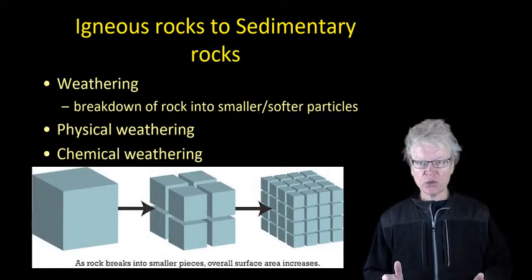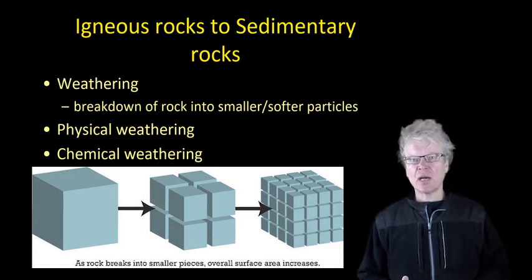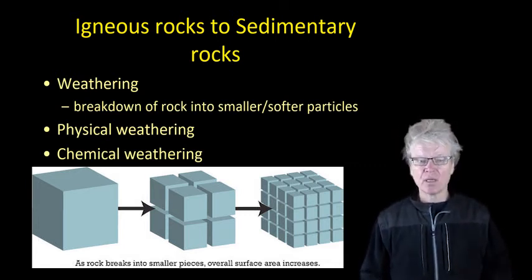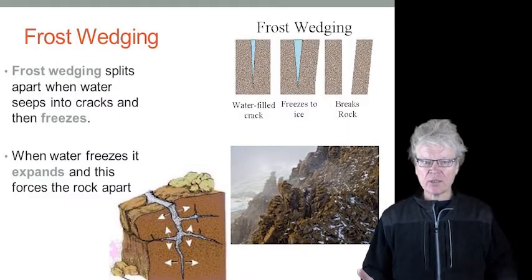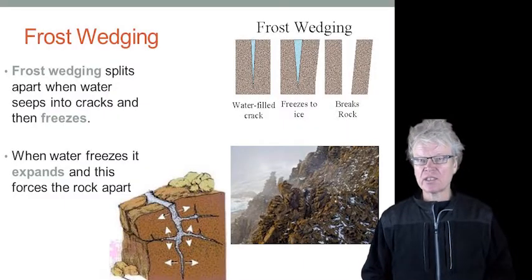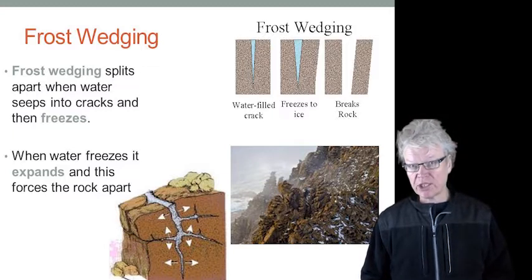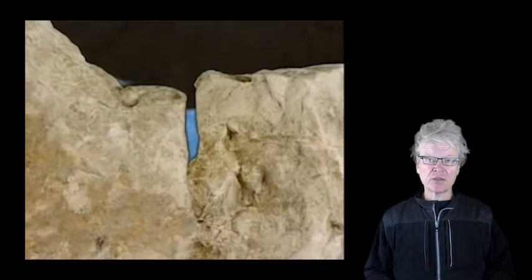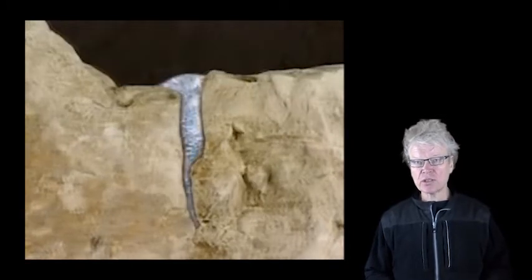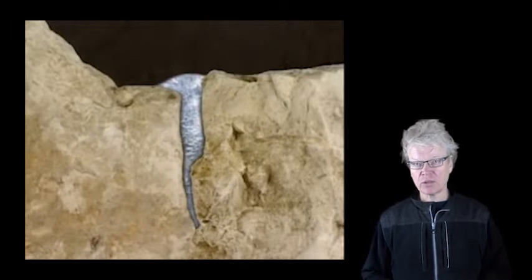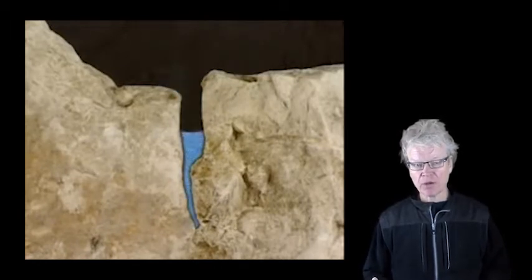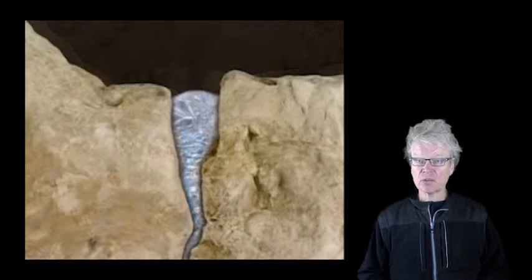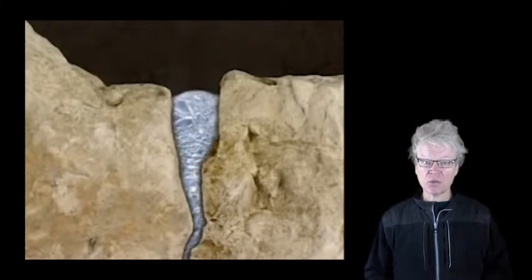Let's have a look at some types of physical weathering. One simple example is mechanical weathering. A good example is frost wedging, where water collects in cracks in the rock, it freezes, expands, and pushes part of that rock away from its original parent rock. That's breaking the rock into smaller particles - that's weathering.